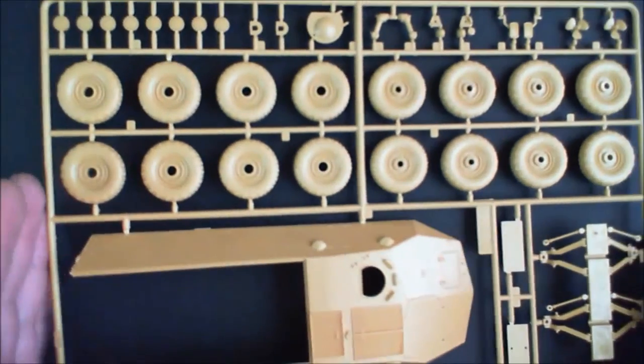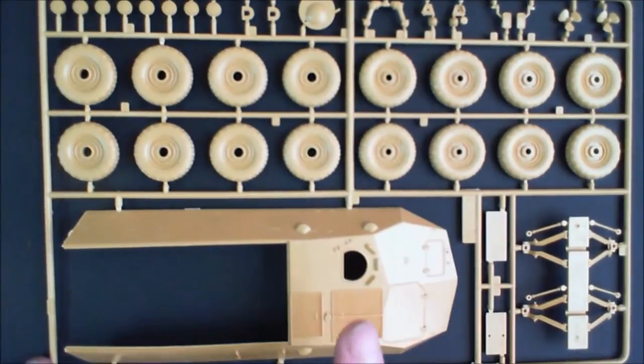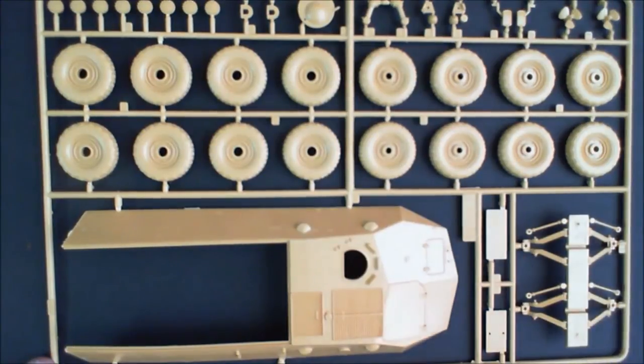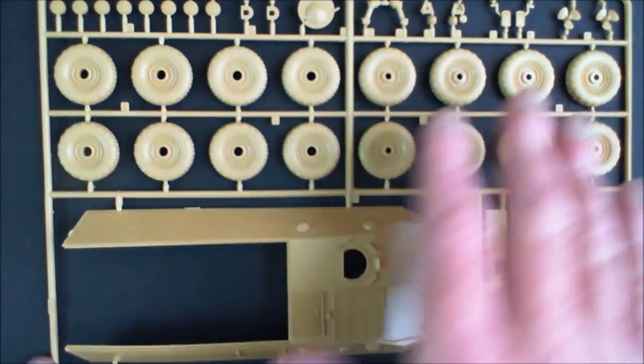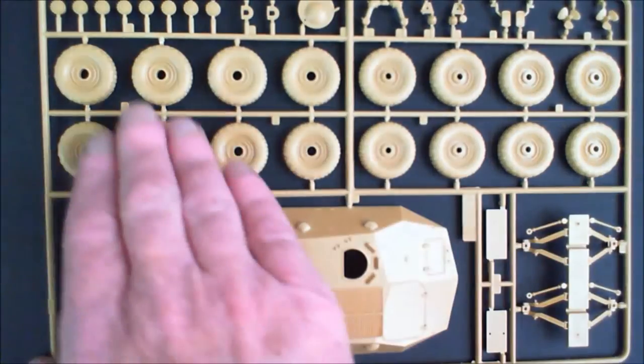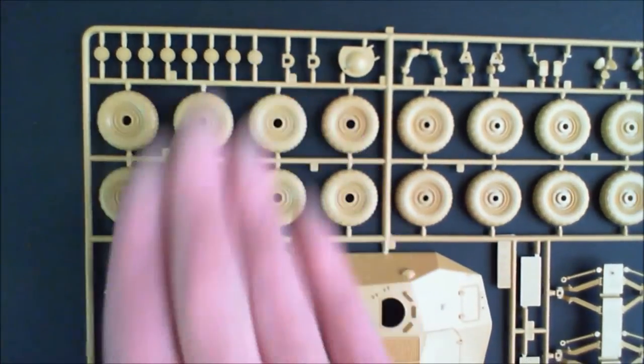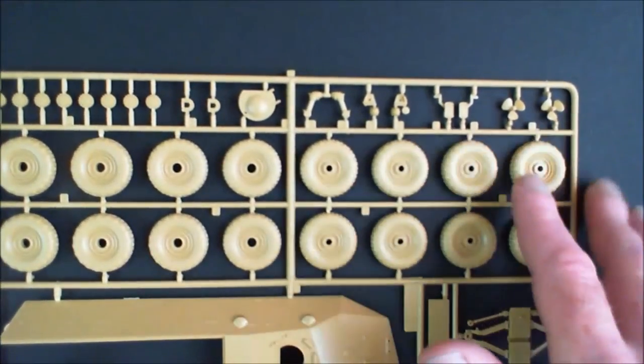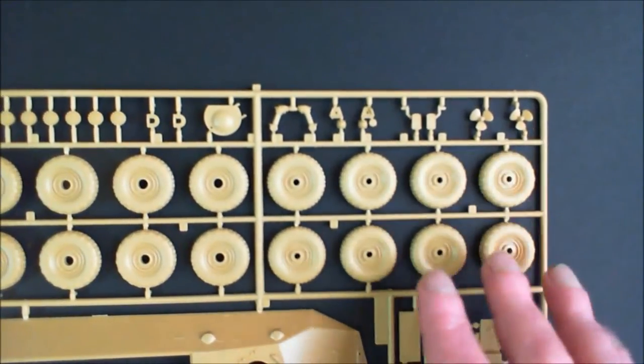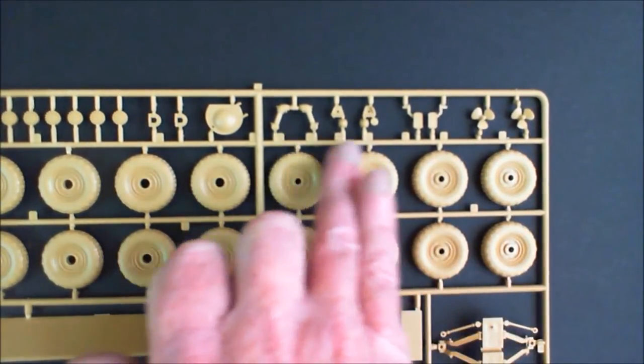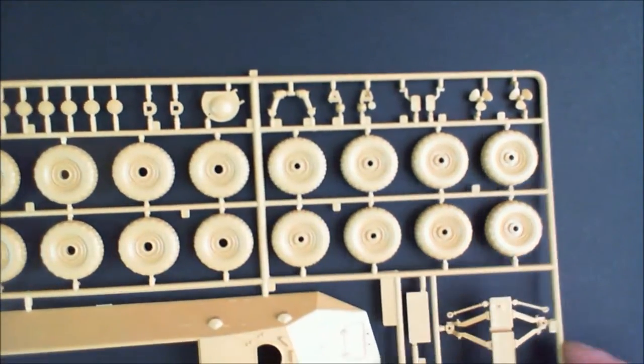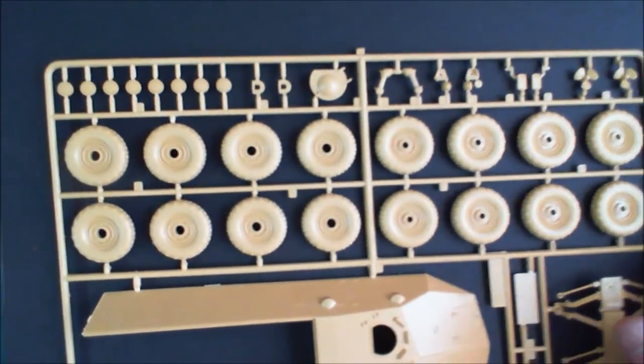Next we've got, yep, you guessed it, sprue B. On sprue B we get the upper hull, a few more what appear to be suspension bits and pieces, the wheels, the wheel caps, the nut caps and things like that. We get a hatch, the mirrors, propellers - it's amphibious - and we get the lights, and what appears to be another bit of suspension parts. So let's have a look down and see what these are like.